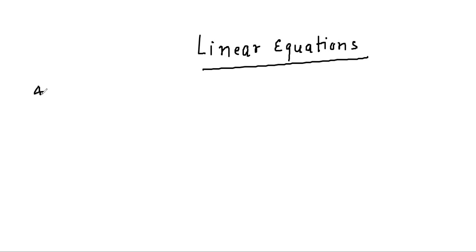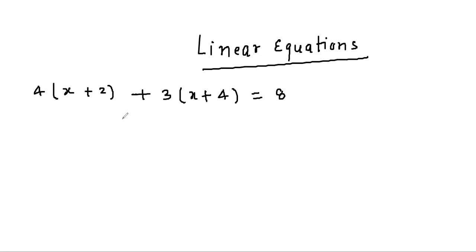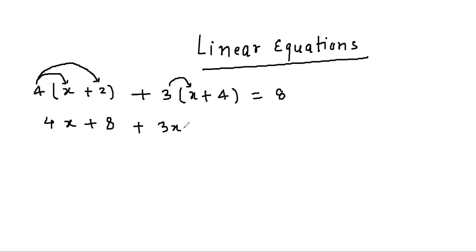We have already seen: suppose we have 4x + 2 - 3(x + 4) = 8. If we take a plus sign, then 4 will be multiplied by both 2x and 2, so it becomes 4x + 8. The same is true here: 3x + 3×4 = 12, equals 8.